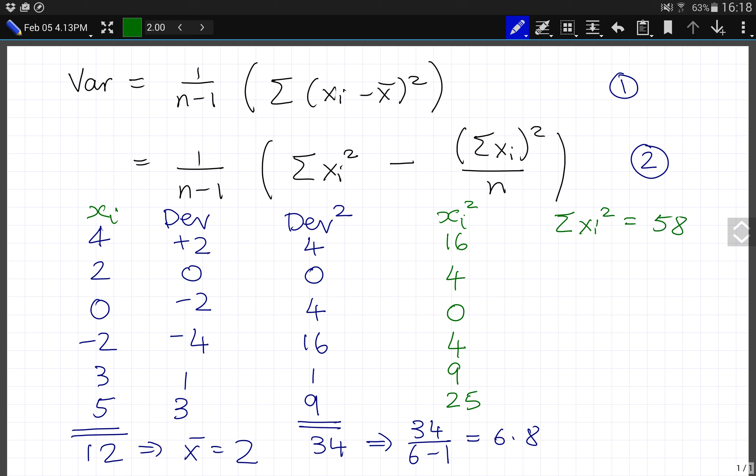So formula 2 says I need to have 1 over 6 minus 1 times 58 minus 12 squared by 6. And if you compute that, it's the same thing.